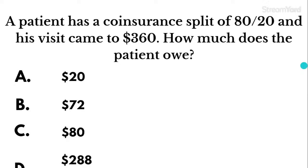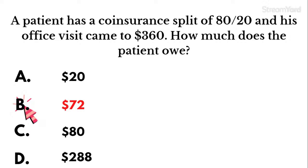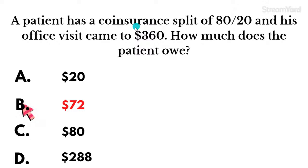Question seven: A patient has a co-insurance split of 80/20 and his visit came to $360. How much does the patient owe? The patient owes $72. A co-insurance split of 80/20 means the insurance covers 80% of the visit and the patient is responsible for the other 20%. To find 20% of $360, that equals $72.